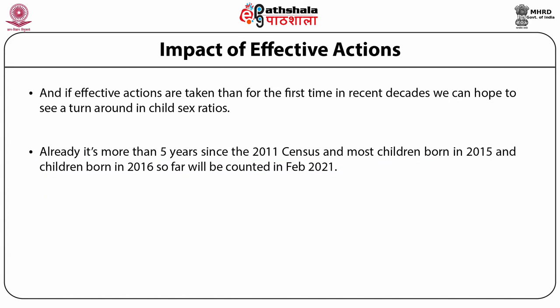Effective actions can still be taken and we can see a turnaround — like improvements seen in Punjab and Haryana and Maharashtra. If the rest of the country can learn from these turnarounds, not every district and region will have to reach 800 levels before it starts improving. A large number of children who will be counted in 2021 have already been born, so it is important to recognize that if we do not start taking effective action for more girls to be born, any turnaround in post-2021 also becomes very unlikely.